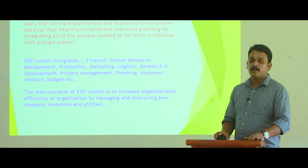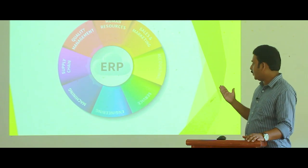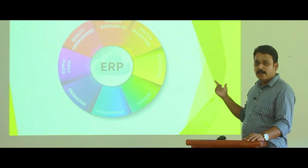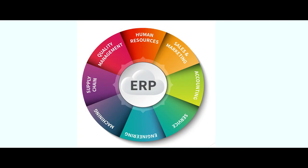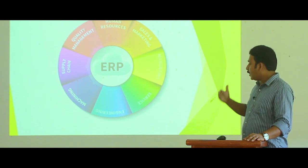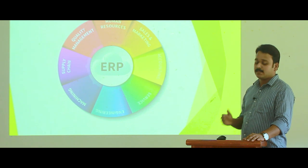We can see a simple diagram related to ERP. At the center is ERP, and surrounding it are different functions and activities of an organization: supply chain, quality management, human resources, sales and marketing, accounting, services, and engineering. These different functions and activities are combined with the help of the Enterprise Resource Planning software package.